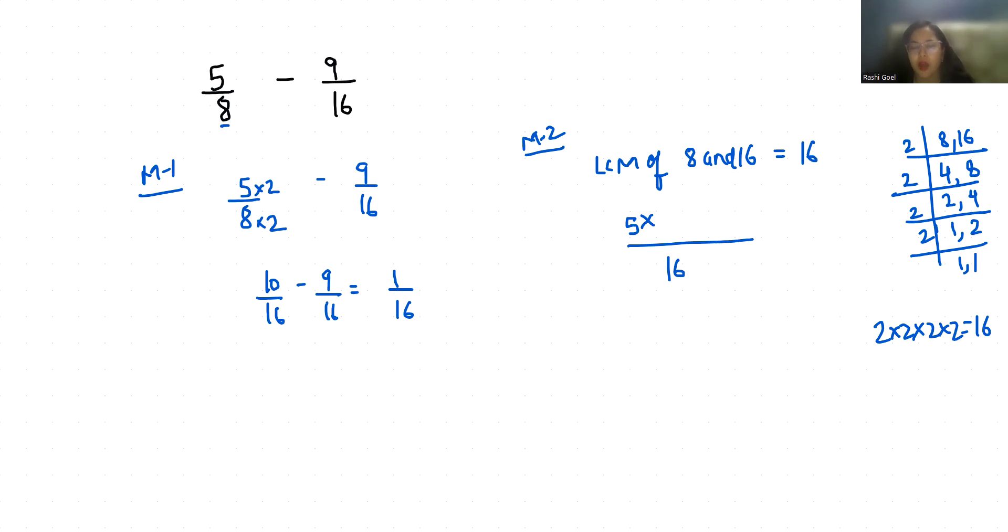Minus, write the numerator again, multiply, and check in table of denominator, the LCM comes at which place. In table of 16, 16 comes at 1 place. So 10 minus 9 by 16, that is 1 by 16.